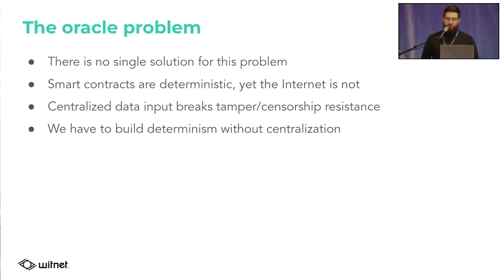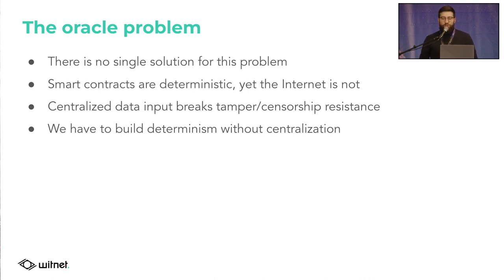It's 2022. Almost everyone here already knows what the Oracle problem is. There is a lot of marketing around this topic, but there is no unique solution for the Oracle problem — there are different approaches, different protocols trying to solve it, and different use cases. The core issue is that smart contracts are deterministic, but the internet is not. So if a smart contract needs to retrieve information from the common web, you cannot simply put it in your smart contract without breaking the tamper and censorship resistance nature of smart contracts. The key is that we have to build determinism without falling into centralization.